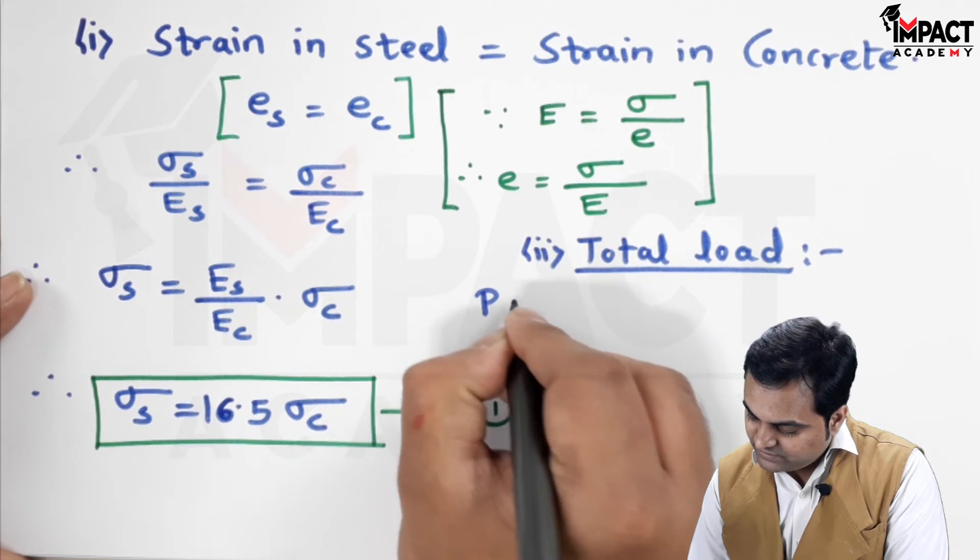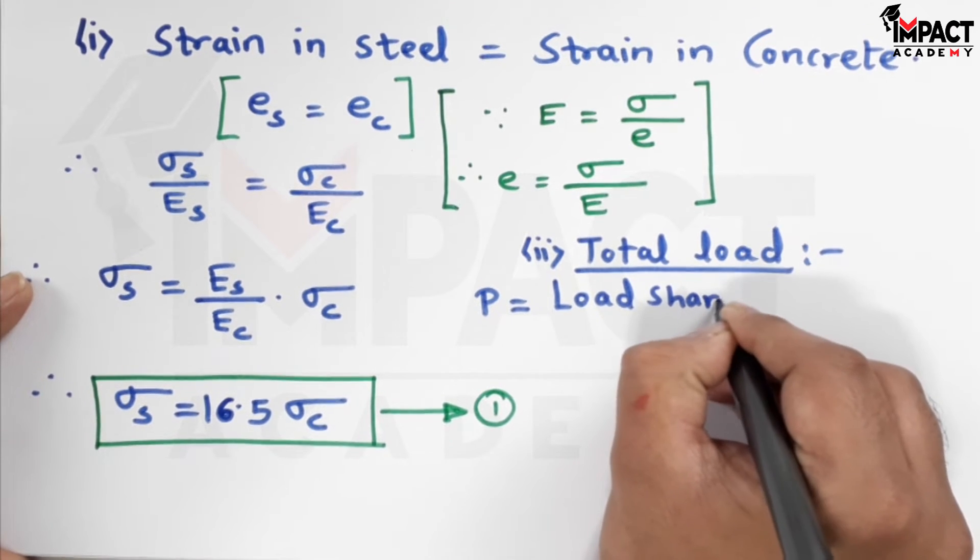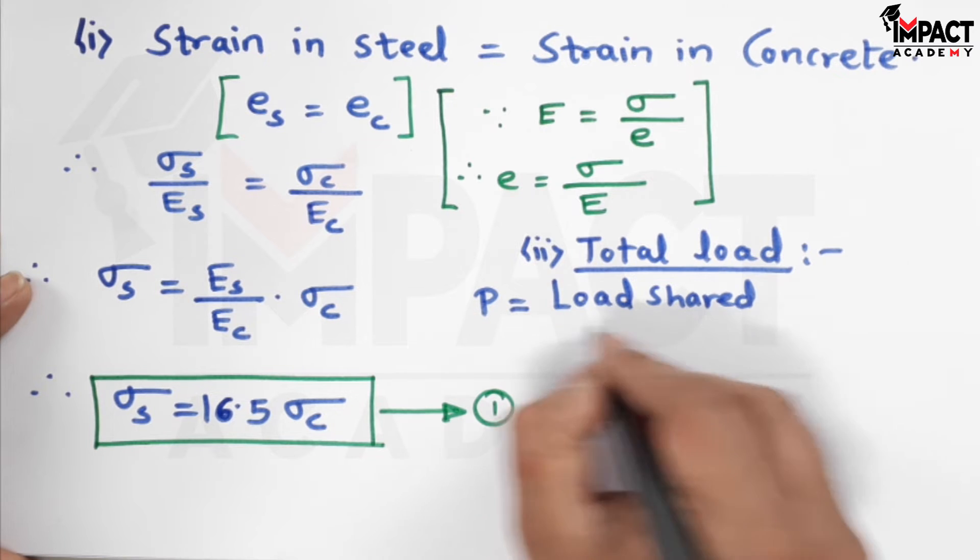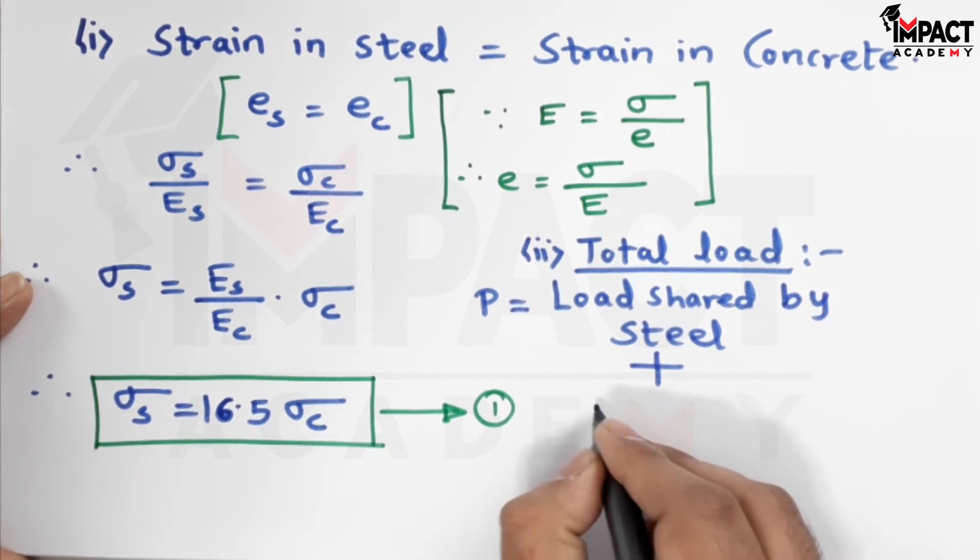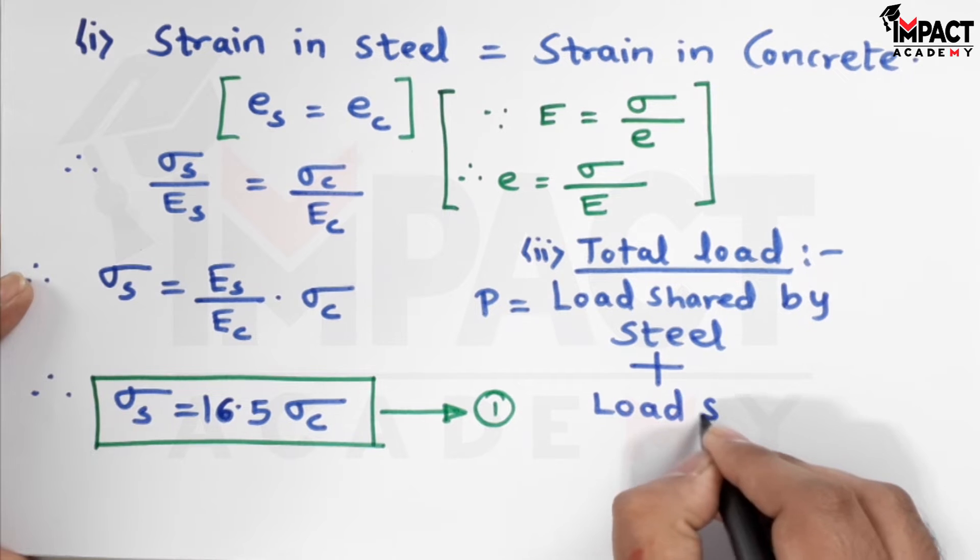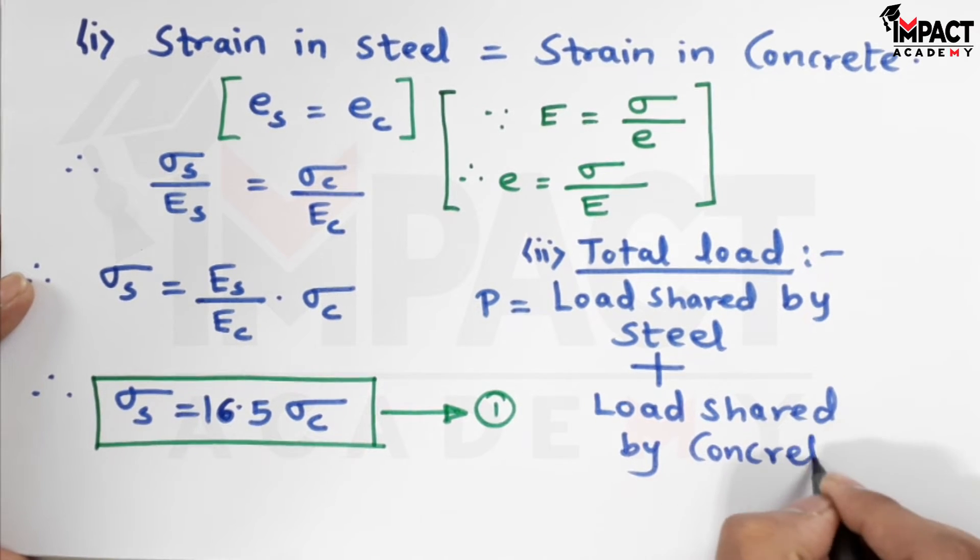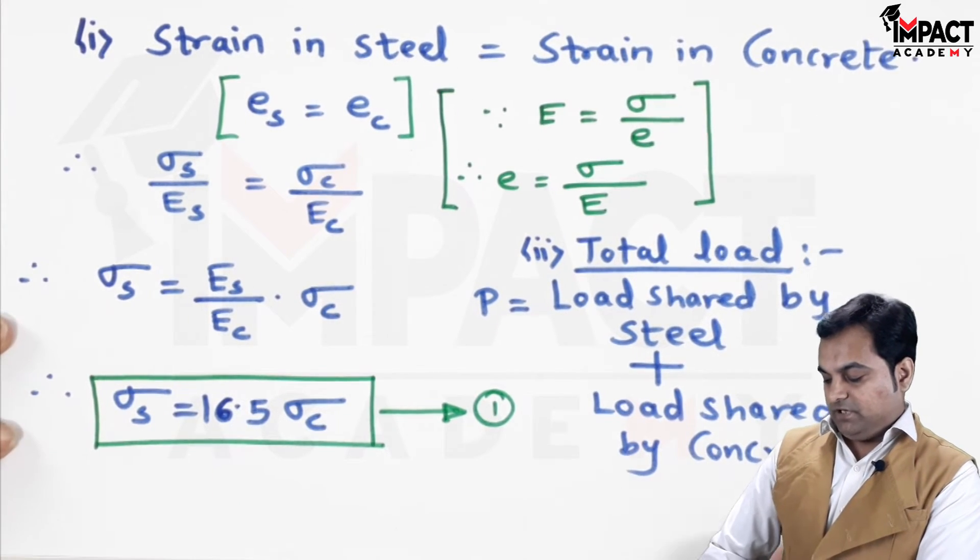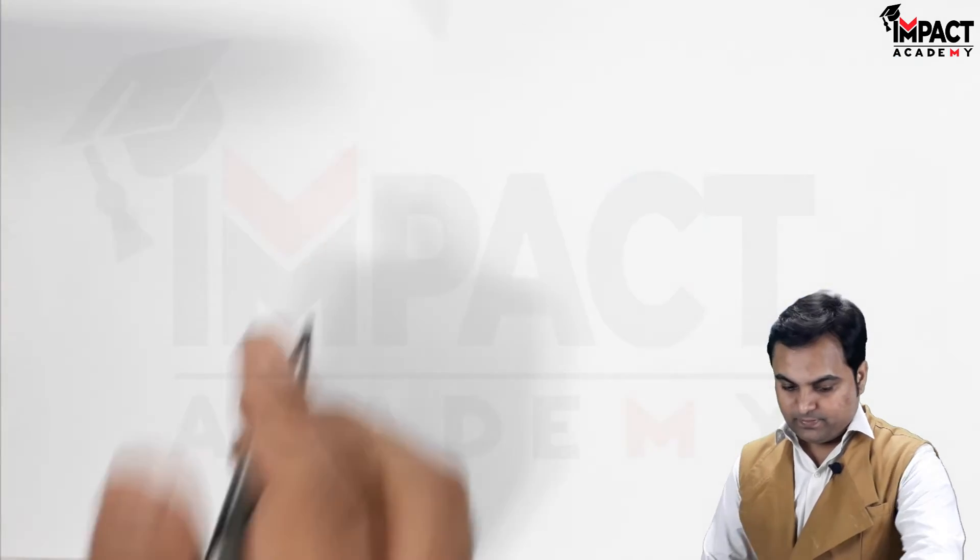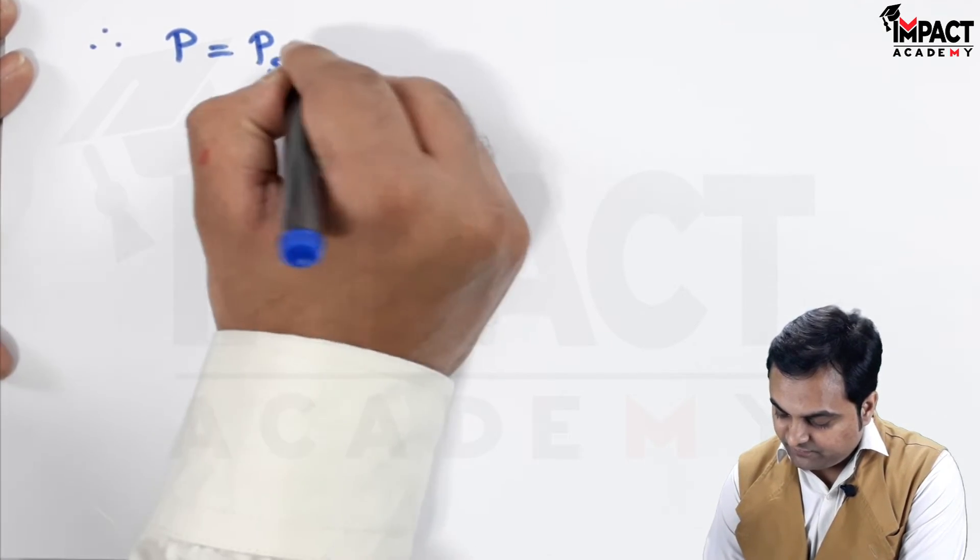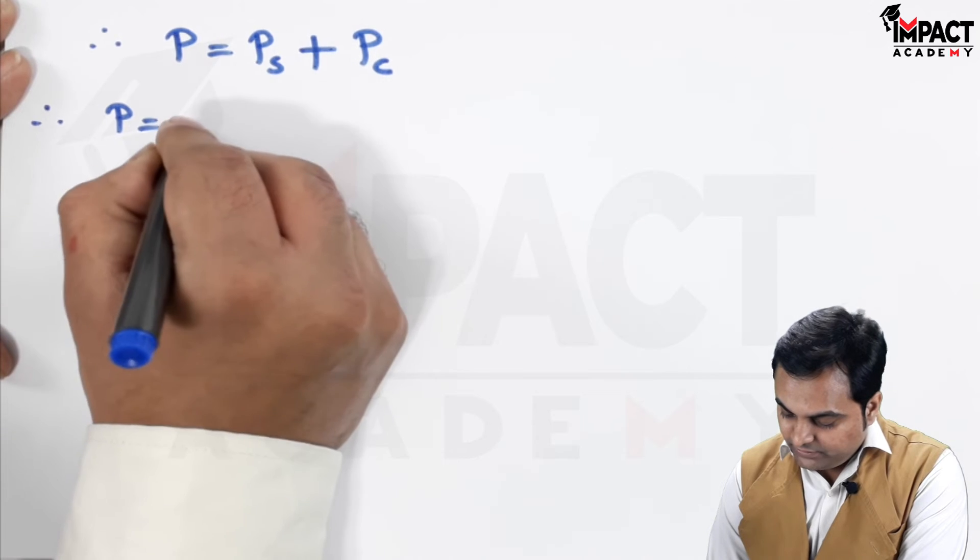Of total load which is capital P is equal to load shared by steel plus load shared by concrete. They are sharing the total load. So, therefore, the load shared by steel is denoted by P suffix S, whereas for concrete P suffix C.